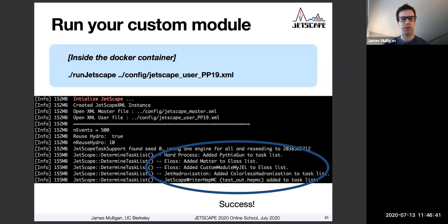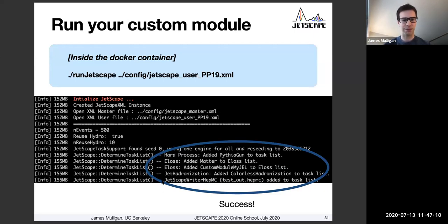When you run this command, you should see in the standard output a printout telling you which modules have been added and are being run. You should see something that says 'a loss added custom module my JEL to the E loss list.' You will also see a lot of printouts with parton input partons to this module — if that's working, that's perfect. That means we've successfully added our new module to the framework and are running it successfully.